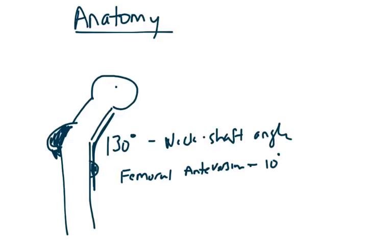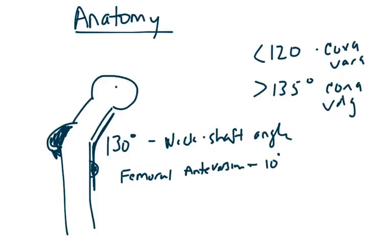Just a reminder for everyone. We said that normal neck shaft angle is about 130 or 127 degrees. We normally call a neck shaft angle that is less than 120 to be something known as coxa vara. Or if we have something greater than 135, we have coxa valga. This is going to come in handy when we talk about the classification, specifically the Garden classification.